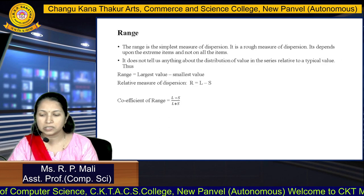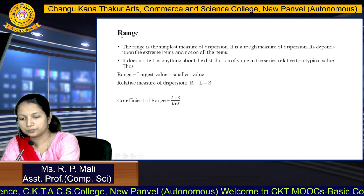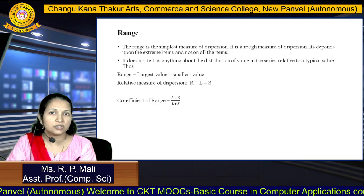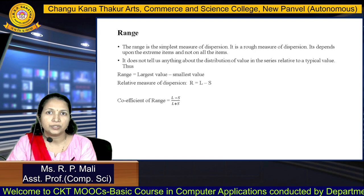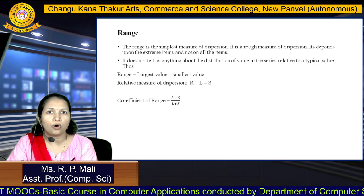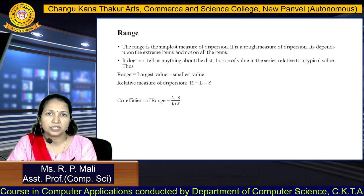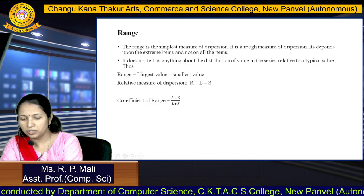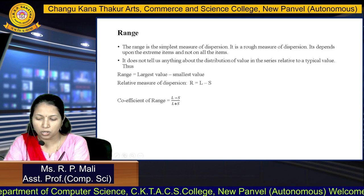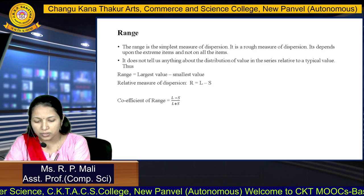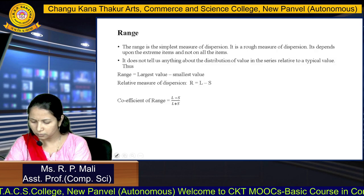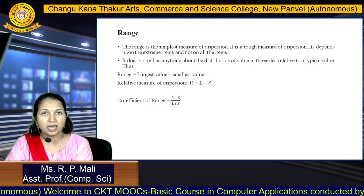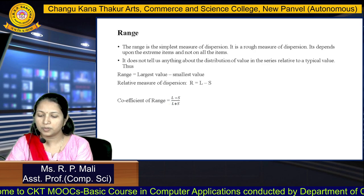First, we are going to see what is range. The range is the simplest measure of dispersion. It is a rough measurement of dispersion. It depends only upon the extreme values and not on all the items. It does not tell us anything about the distribution of the values in the series relative to a typical value. Range is equals to largest value minus smallest value, denoted as R = L minus S. The coefficient of range is equals to L minus S divided by L plus S.